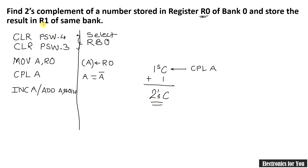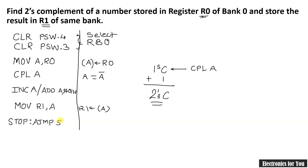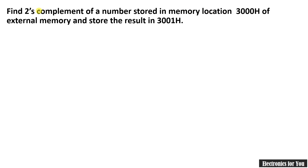The two's complement result is now in the accumulator and needs to be stored into R1. We use the MOV instruction: MOV R1, A, which copies the content of the accumulator into register R1. At the end we stop the program with a STOP/HLT instruction. In this way we can find the two's complement of a number stored in register R0 of register bank 0.